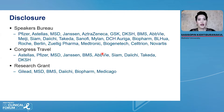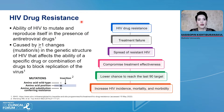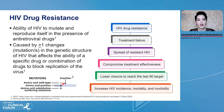I'd like to start with the cause of HIV drug resistance. It is the ability of HIV to mutate and reproduce the cell in the presence of antiretroviral drugs. It is caused by one or more point change mutations in the genetic structure of HIV that affect the ability of a specific drug or combination of drugs to block replication of the virus. You can see the example here — this is the amino acid position 55 changing from K to R.